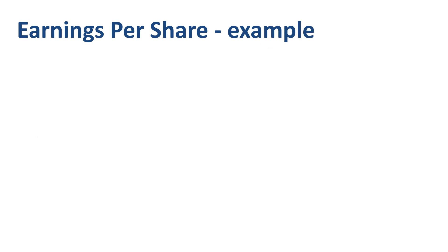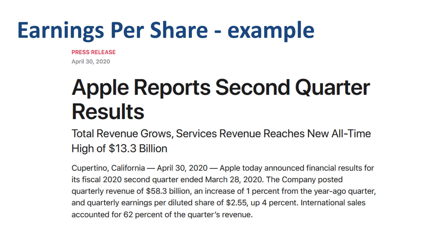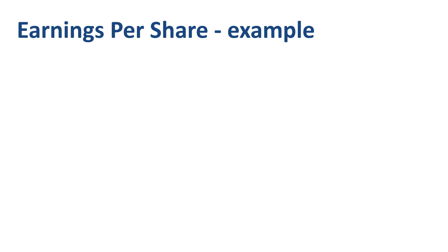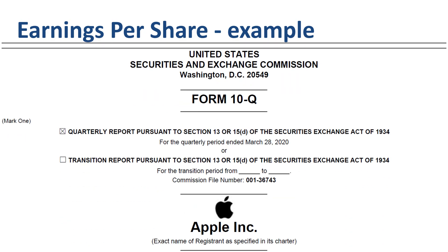Let's take a real-life example of calculating earnings per share for Apple Inc., second quarter of fiscal year 2020. The press release states that quarterly earnings per diluted share were $2.55, an increase of 4% versus the EPS of the prior year. We will replicate the calculation to verify the $2.55 EPS, and we will analyze what drove the increase in EPS of 4% versus the prior year. To do this, we turn to the 10Q filing of quarterly financial results.